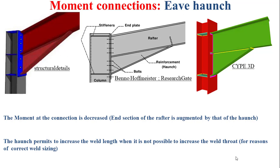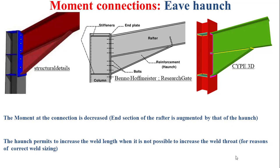It is also worth noting that the eave haunch can be directly welded to the flange of the column. The eave haunch permits to reduce the moment at the connection since the end section of the rafter is augmented by that of the haunch. It also allows increasing the weld length when it is not possible to increase the weld throat, ensuring correct weld sizing of the weld bead between the rafter and the end plate. This technological solution is also carried out between rafters, in which case the moment connection is called the apex haunch.